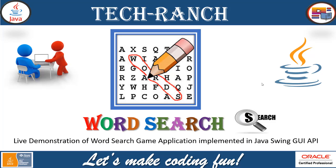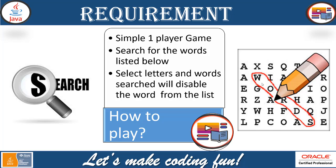Today we are going to show you a live demonstration of a Word Search game application implemented in Java Swing Graphical User Interface API. Here we are going to have a grid of alphabets out of which we are going to search for the words listed below. Once you select the letters, Word Search will disable the word from the list.